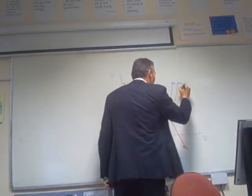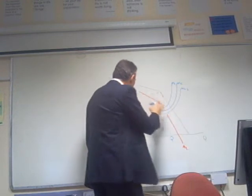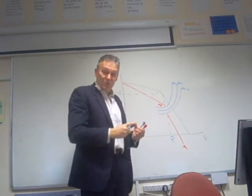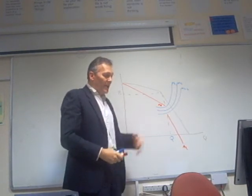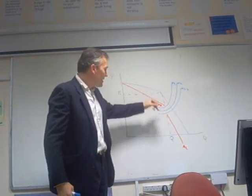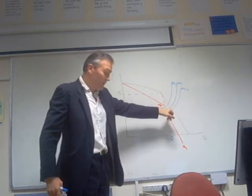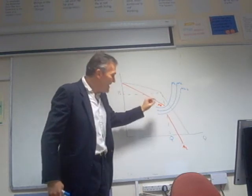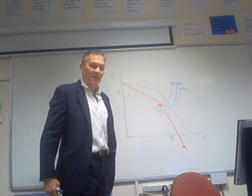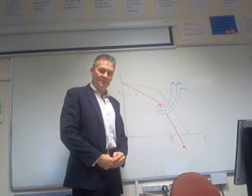Likewise, if marginal cost were to fall to MC2, output and price do not change. Therefore we can explain why oligopolistic firms do not change their price: they don't want to because of the different slopes of the demand curve above and below P1, and they don't need to because they can continue to operate where marginal revenue equals marginal cost without changing output or price.